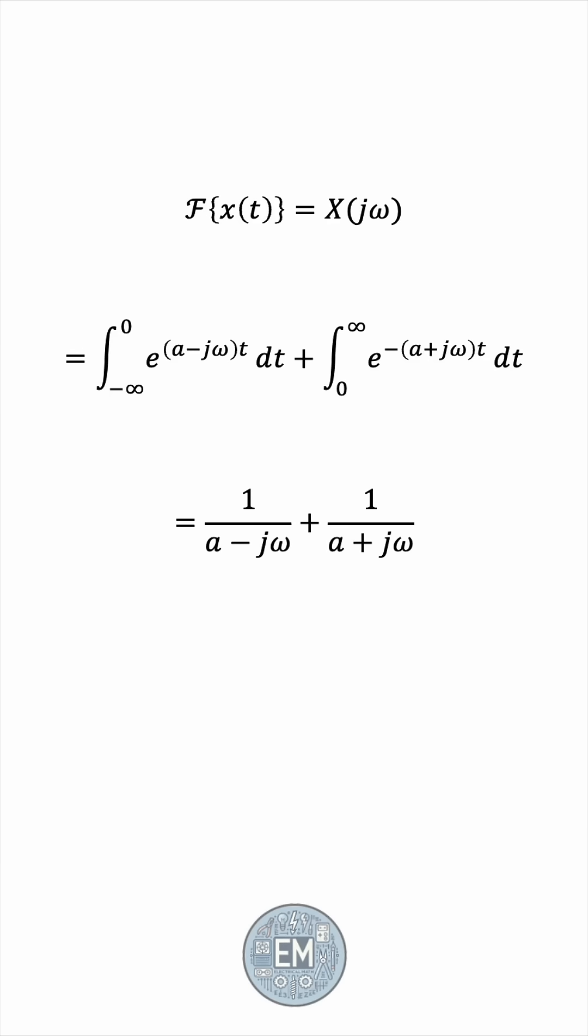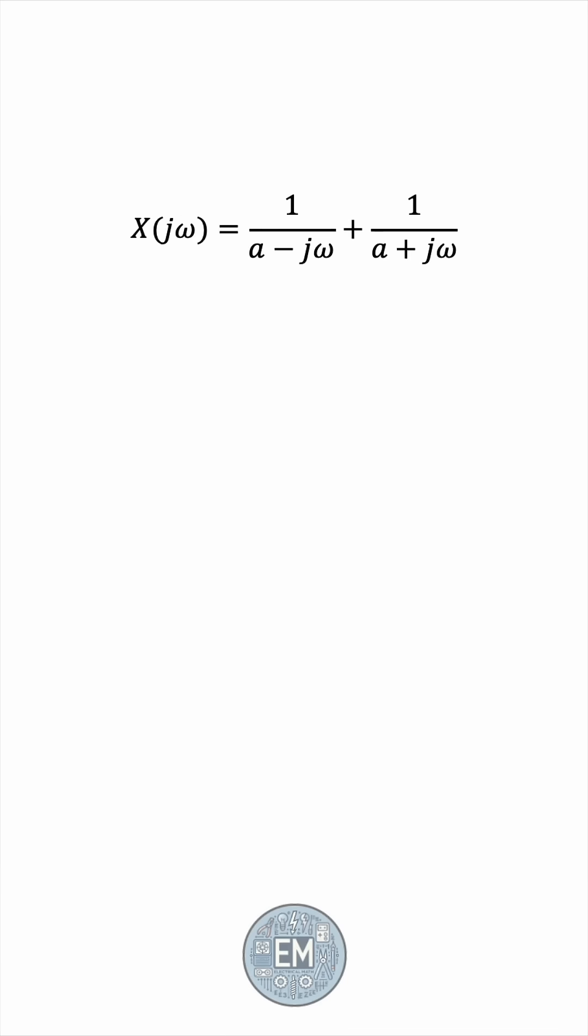Okay, so this is our capital X of j omega, but there's actually room for simplification. The denominators are complex conjugates, so if we give the fractions a common denominator, j omega cancels out, and we end up with 2a over a squared plus omega squared, a purely real function of omega.